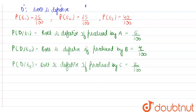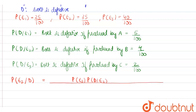Since we have to find the probability that the defective bolt was produced by C, we apply Bayes' theorem. The probability of E3 given D equals probability of E3 into probability of D given E3, divided by the sum: probability of E1 into probability of D given E1, plus probability of E2 into probability of D given E2, plus probability of E3 into probability of D given E3.